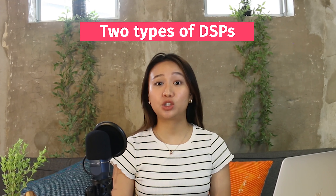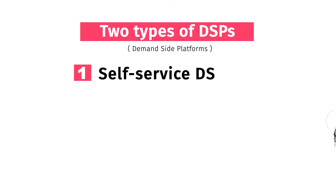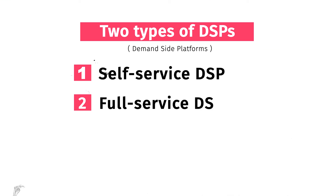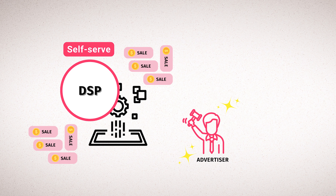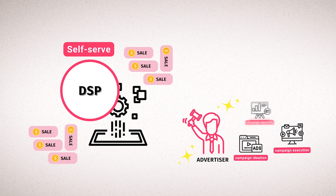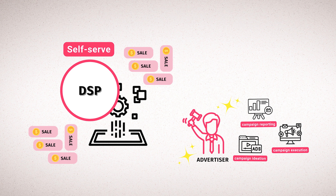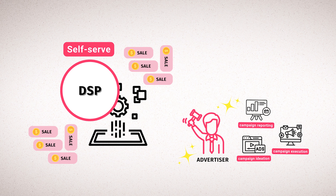What are the types of demand side platforms? There are two types of DSPs: a self-service and a full-service DSP. A self-serve DSP is just a platform where advertisers can buy advertising. Campaign ideation, execution and reporting would be performed by the advertiser's team or agency.